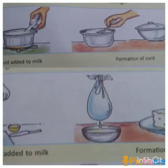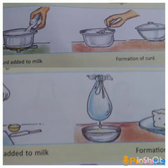The first category is slow and fast changes. Slow changes are changes that take place over a longer duration of time. Fast changes are changes that take place quickly, or in a shorter duration of time.